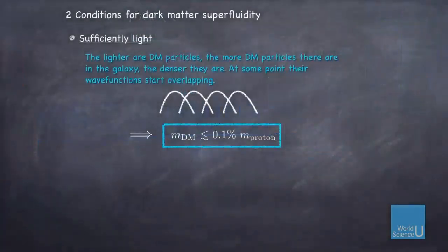Why would it be that dark matter can be a superfluid? First of all, you need a lot of these particles. You need a lot of dark matter around in order to be dense enough to form a superfluid. The first condition is that you have a lot of dark matter atoms. And we know the total mass of dark matter that we need in galaxies.